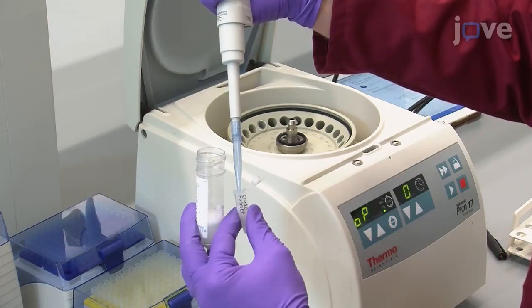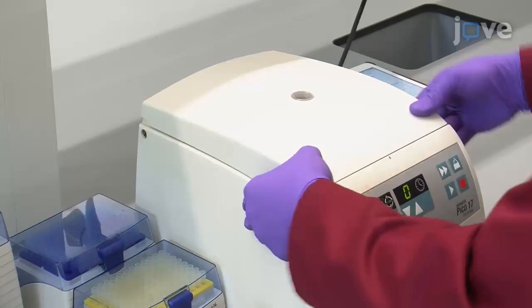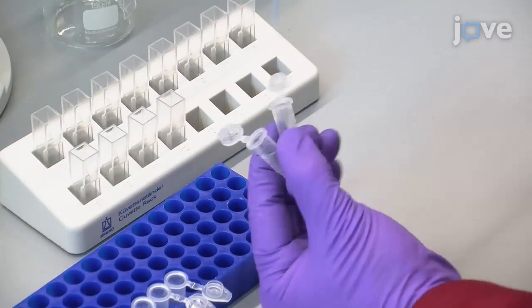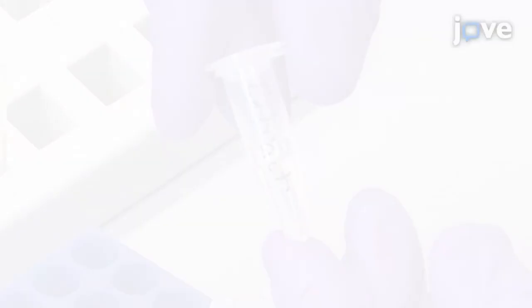Next, transfer one milliliter from the suspension to a 1.5-milliliter tube, and spin the sample for one minute at 10,000 times G to sediment the solid particles. Transfer 500 microliters of the supernatant to a clean 1.5-milliliter tube labeled lactase extract.